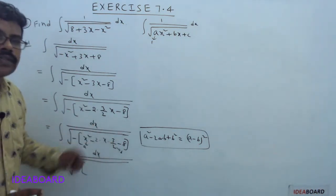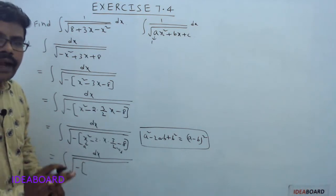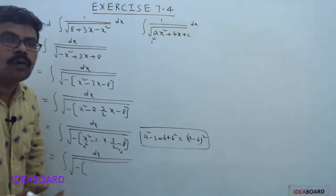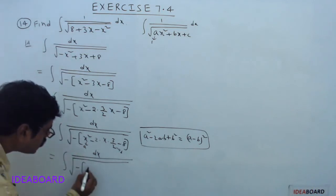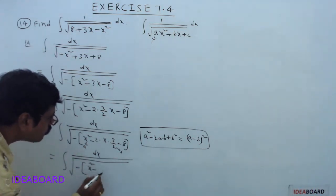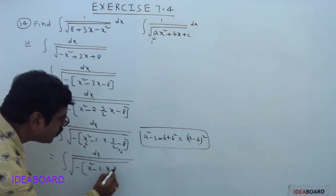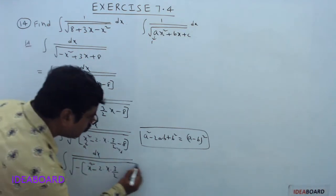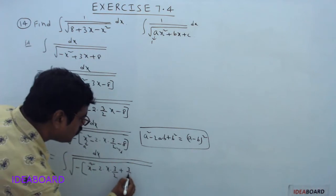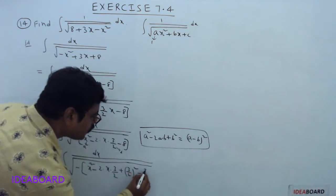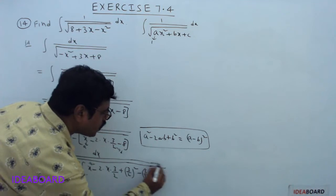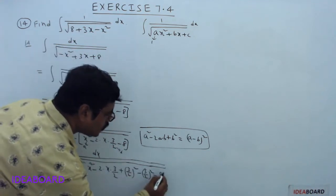The term we need is (3/2)². So, adding and subtracting (3/2)² gives us: x² minus 2·x·(3/2) plus (3/2)² minus (3/2)² minus 8.